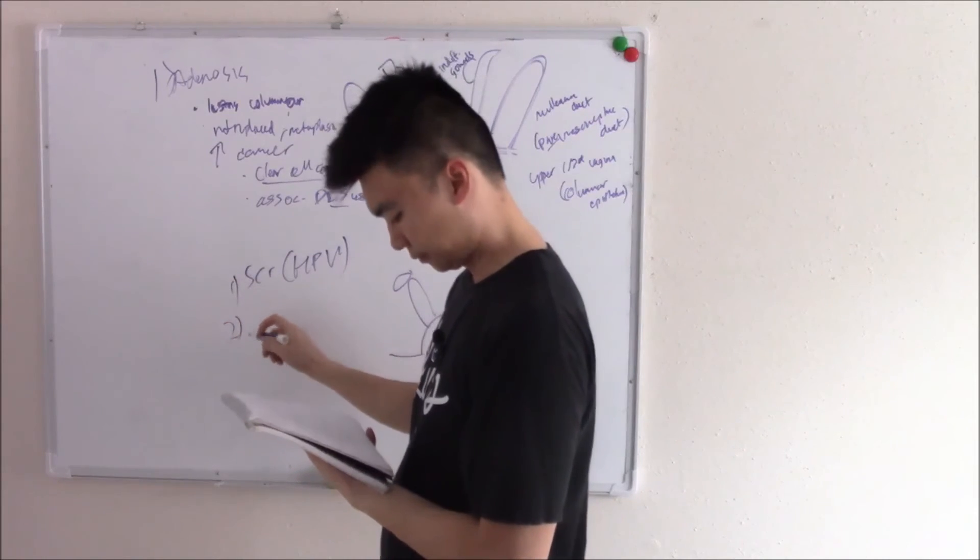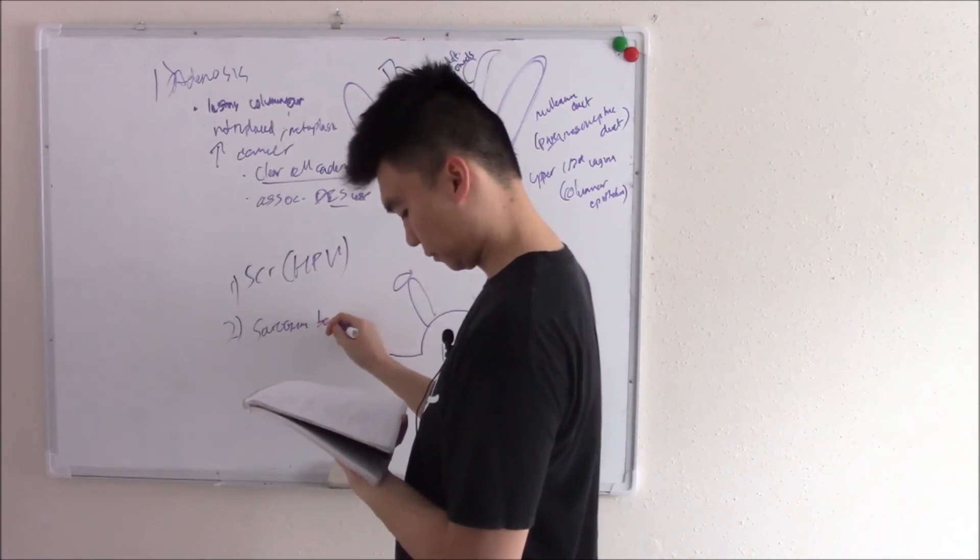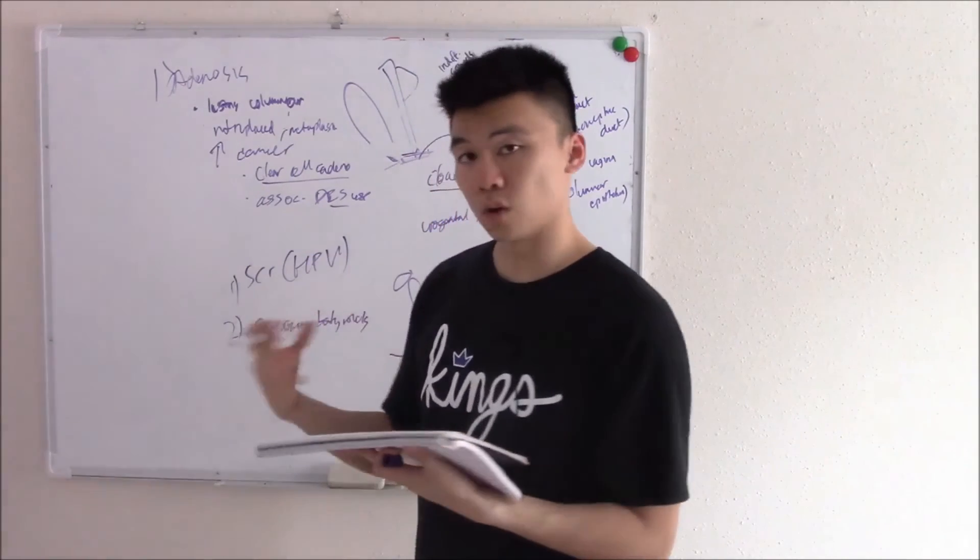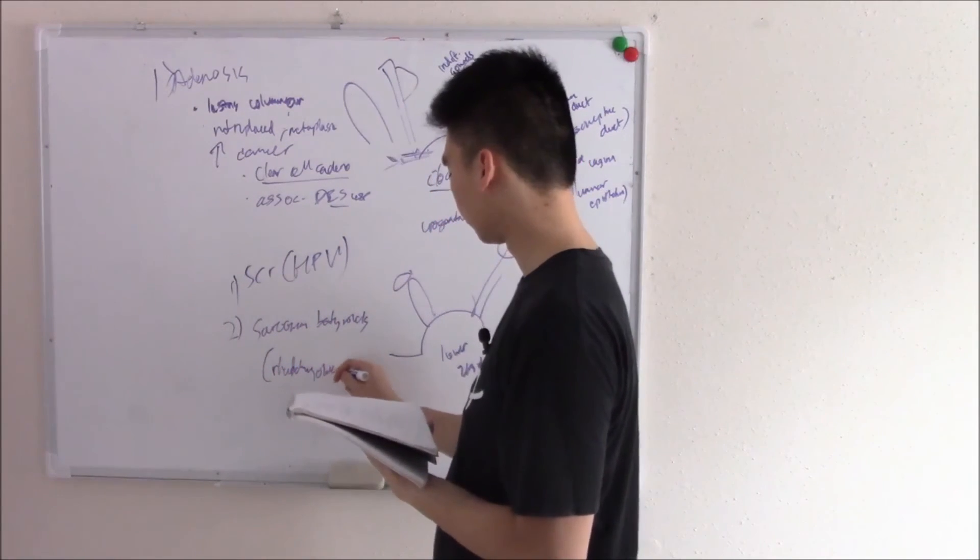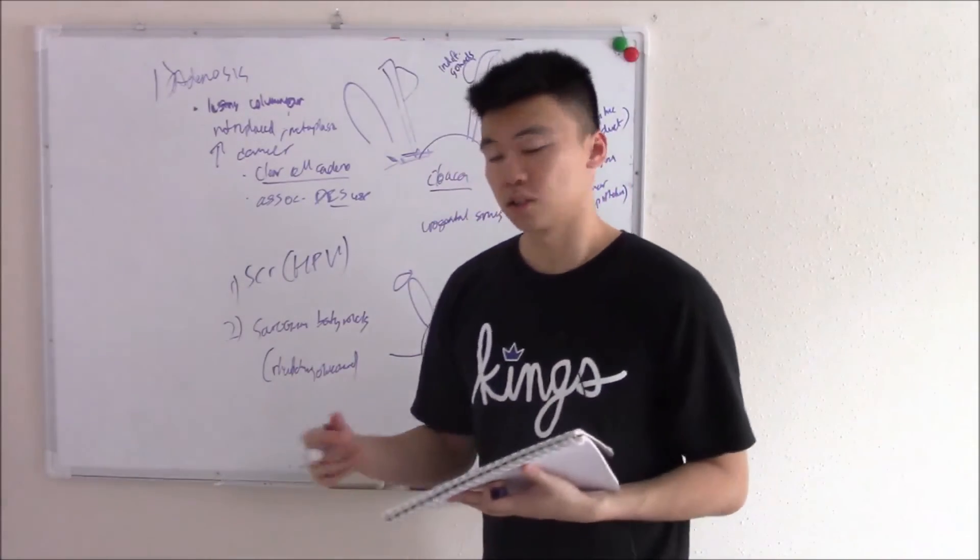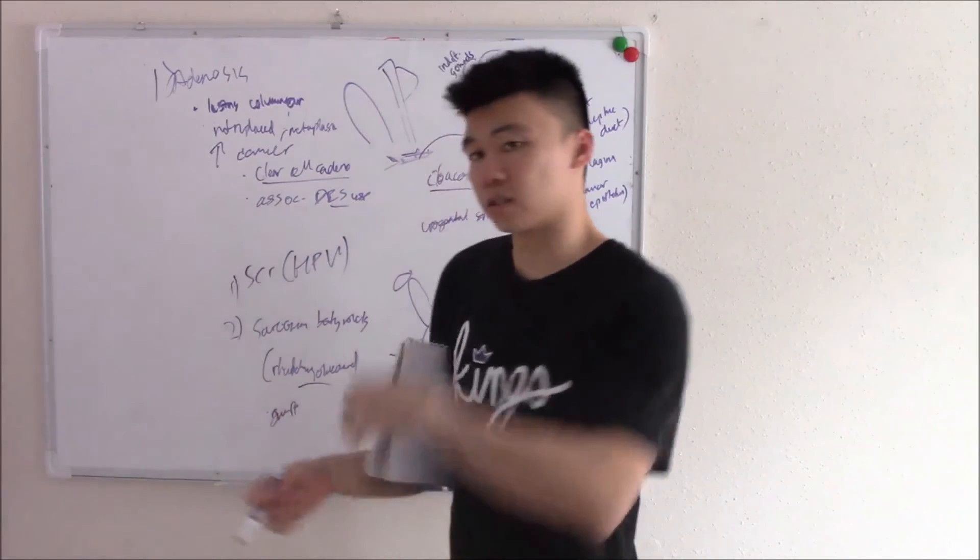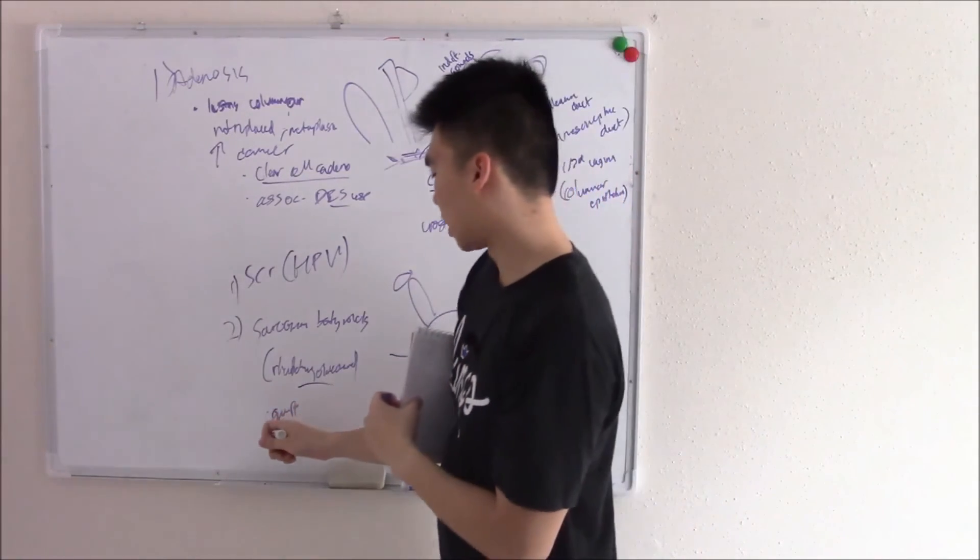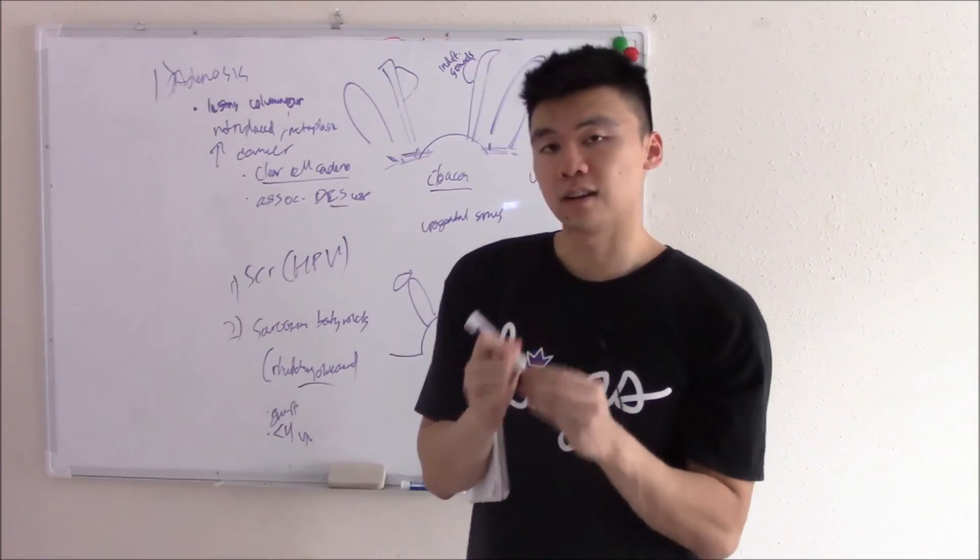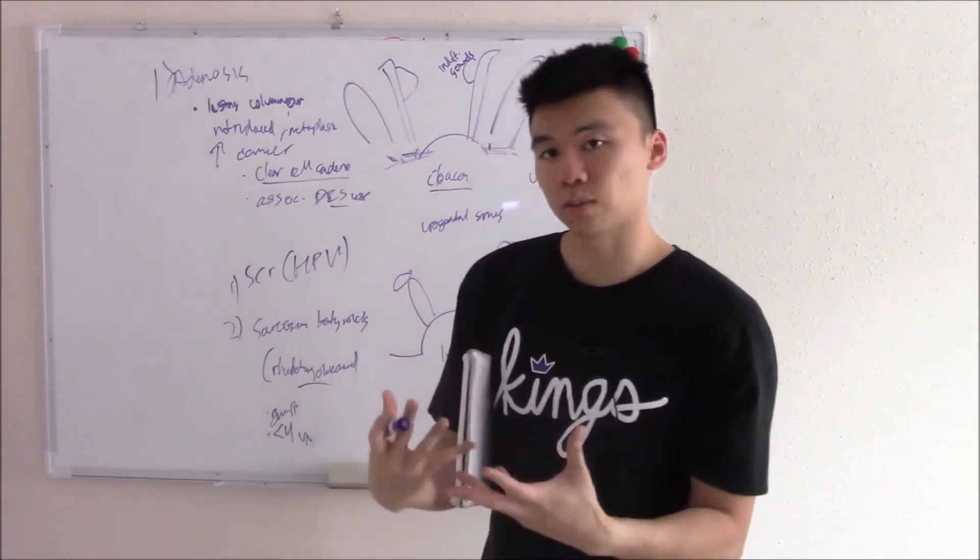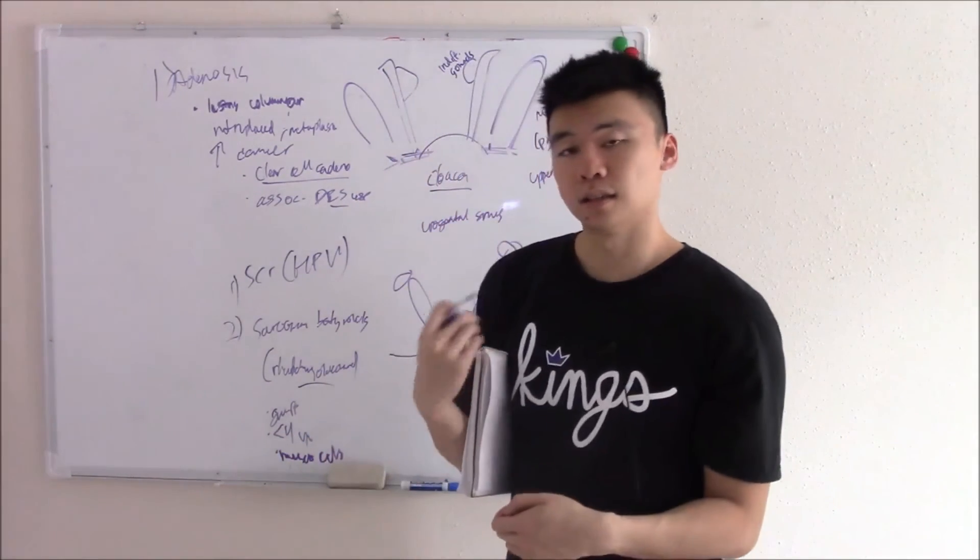And one last one is called sarcoma botryoides, which is a rhabdomyosarcoma variant. So rhabdomyosarcoma - judging by the name, is from mutated muscle cells. It looks like grapes. Have you ever had just a bunch of grapes? That's what it looks like. And it comes out of the vagina in younger patients, usually less than four years old. Very distinct. A picture will be in my notes. But know that it's grape-like, from muscle cells, and it's seen in younger patients.